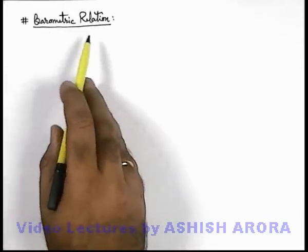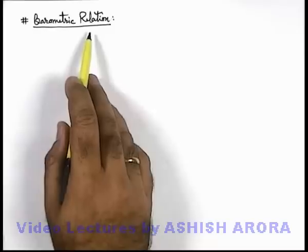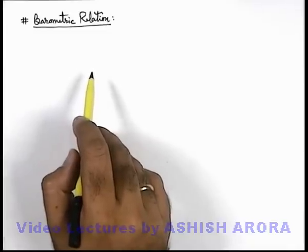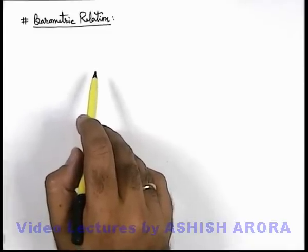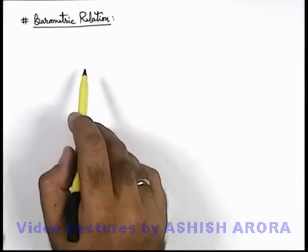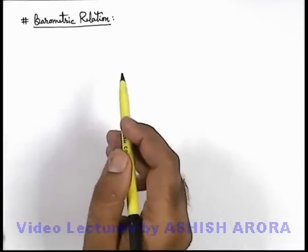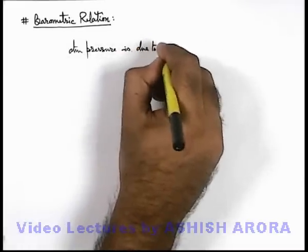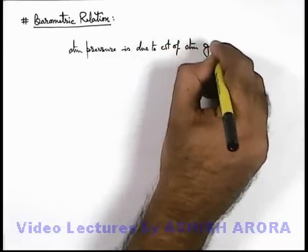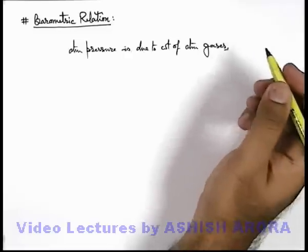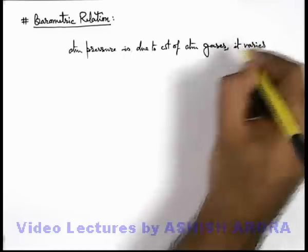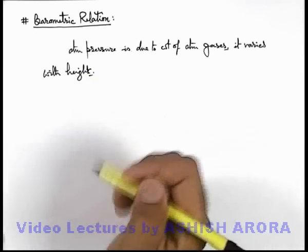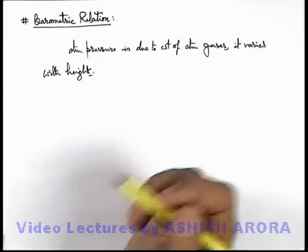Now we will study about the barometric relation. This relation is basically the variation of atmospheric pressure with height. Atmospheric pressure is given as 1.01 × 10⁵ Pascal, and it is due to the weight of atmospheric gases. It also varies with height, because as height increases, the weight of atmosphere above a point where we are measuring atmospheric pressure decreases.